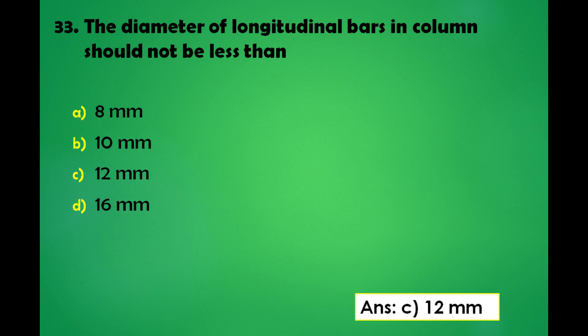The diameter of longitudinal bars in a column should not be less than: a) 8mm, b) 10mm, c) 12mm, d) 16mm. The answer is: the diameter of longitudinal bars in a column should not be less than 12mm.